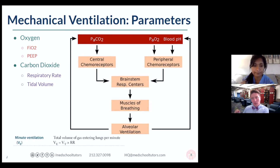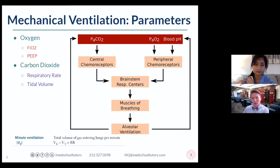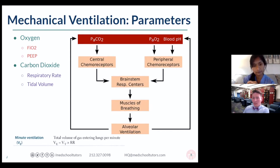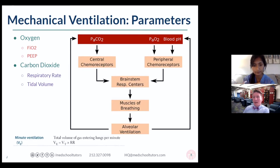The general rule of thumb is that if somebody has a PaO2 value falling lower than 70 on the exam — so 70 millimeters of mercury — the normal value being 100 in a healthy normal individual, and falls below 70, we start to kick in what's called our hypoxic drive.